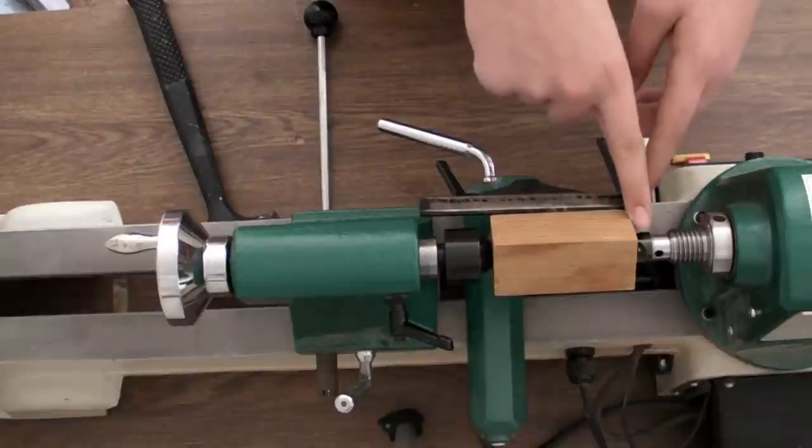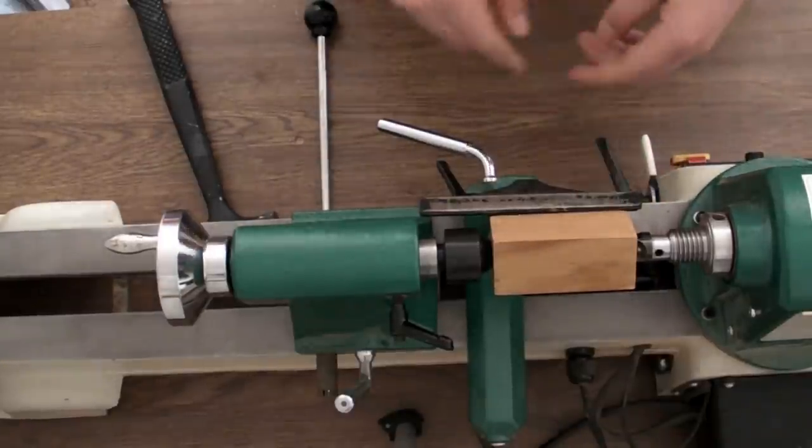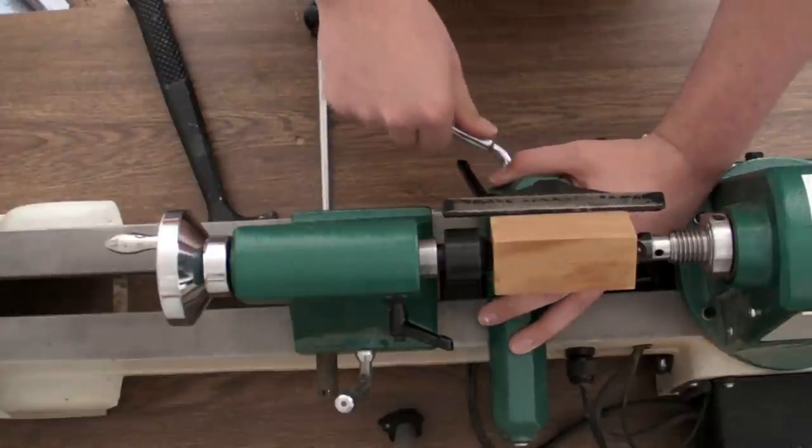You can put your tool rest directly in the middle. But if you're starting on an edge, you want overhang. I'll explain why later. Just for now, you want overhang on both sides.